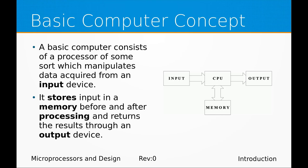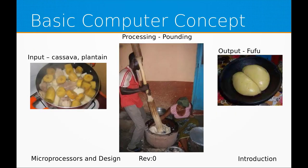A basic computer consists of an input, a CPU, an output, and a memory. We give it some data, the CPU does some processing on it, and then it gives the output back to the user. The data being processed is stored in memory before and after processing. For example, using fufu pounding: the input is the cassava and plantain, the processing is the pounding, and the output is the final fufu.